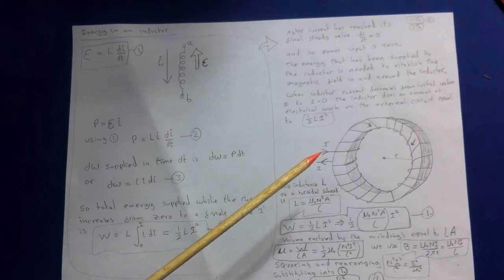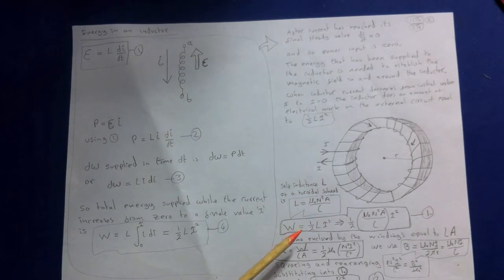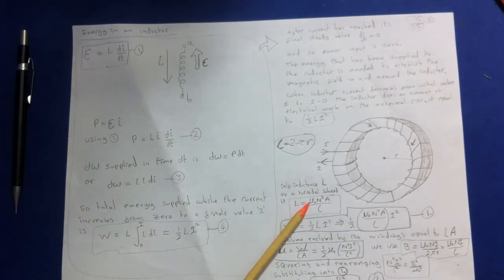The volume in the toroid is then approximately equal to the circumferential length L equals 2πR multiplied by the area. The self-inductance L of a toroid solenoid is L equals μ₀N²A over L. That's one we found earlier for a solenoid.